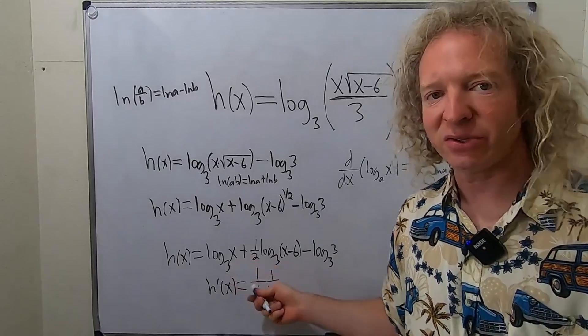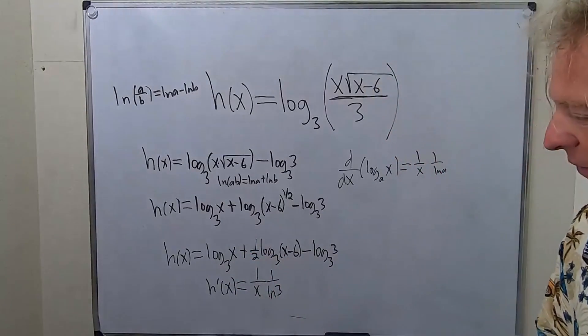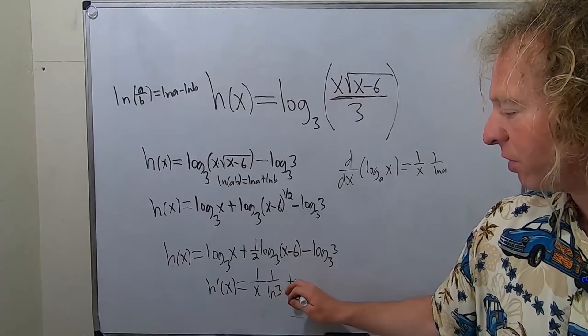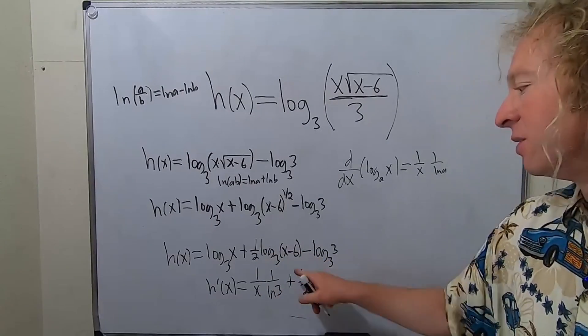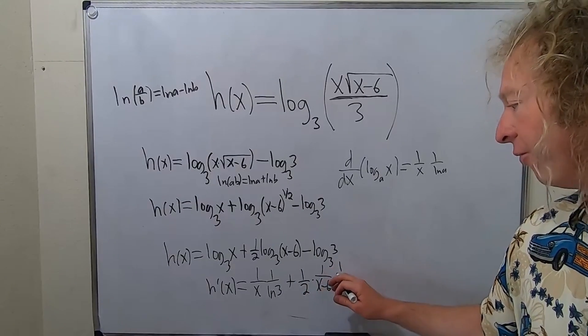So in this example here, a is 3. So it's simply 1 over x, 1 over ln 3. Here, this 1 half hangs out, so plus 1 half times, and then it's 1 over x minus 6, 1 over ln 3